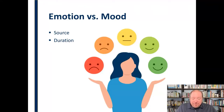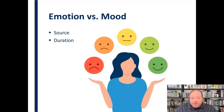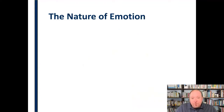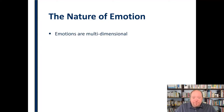So there are differences here. For emotions specifically, we know where they come from and they don't last quite as long, whereas moods we don't really understand the source and they tend to last longer. Our discussion is going to focus on emotion, so let's talk about the nature of emotion — some different characteristics that are important. First, emotions are multidimensional. We experience emotions in several different ways.